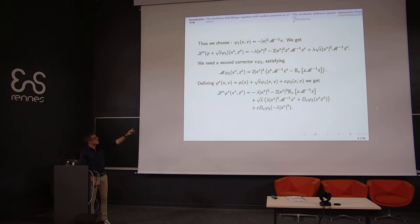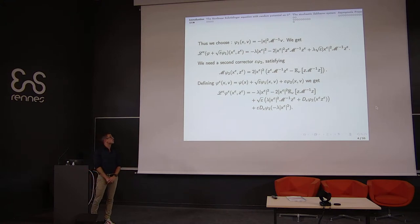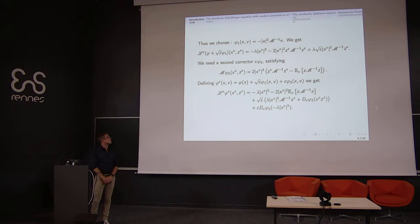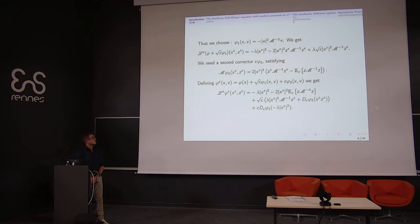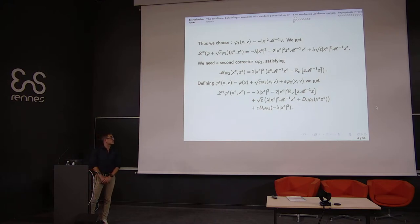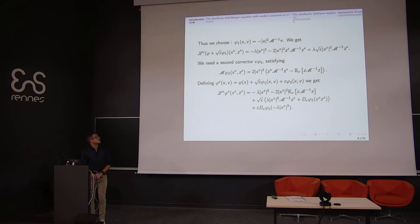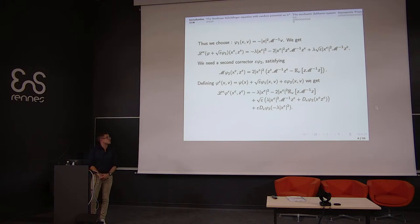In the expression of phi-2, we remove the expectation under the invariant measure of the process z, in order to solve the Poisson equation and invert the infinitesimal generator m. Finally, defining phi-epsilon as phi plus its two correctors, we get for L-epsilon applied to phi-epsilon an expression with no terms of negative order in epsilon, only terms of order zero or greater. This allows us to identify the limit quantity, which is in fact the infinitesimal generator of the limiting process.